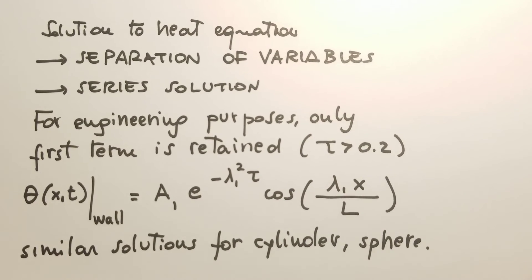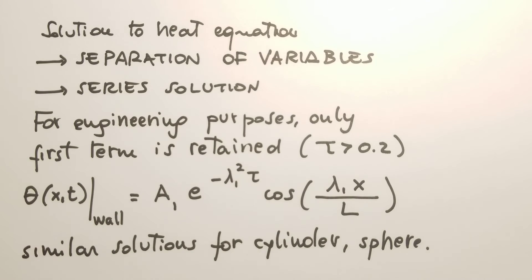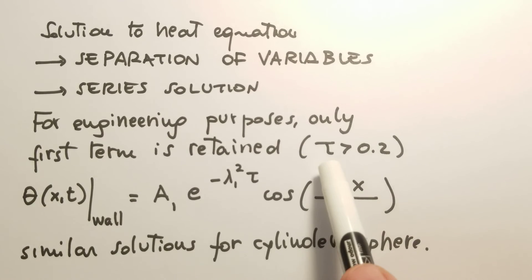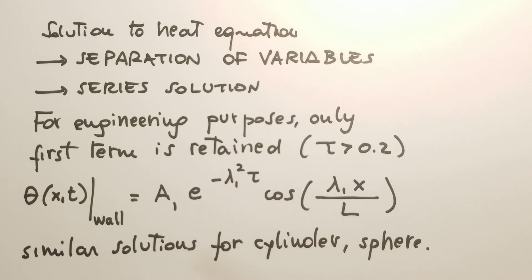To solve the conduction equation, we use a technique called separation of variables, which yields a series solution with an infinite number of terms. For engineering purposes, we are interested in solutions for a Fourier number greater than 0.2. The solution contains a cosine term and an exponential that decays in time. For cylinders and spheres, similar solutions apply. We can use the first term of the series or as many terms as needed for accuracy.